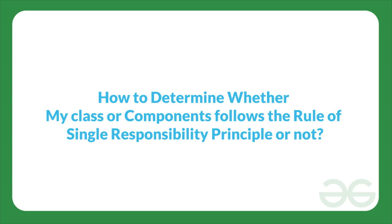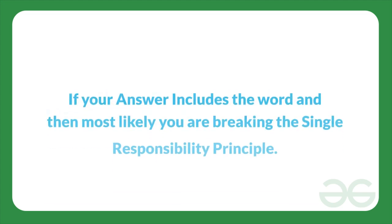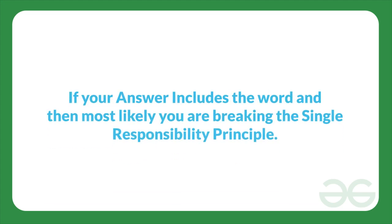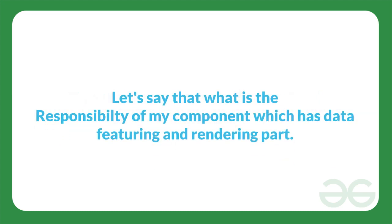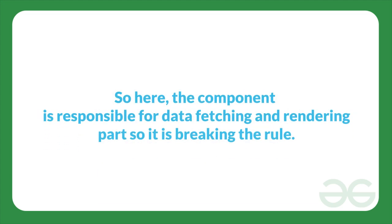A very quick and useful rule I follow is: ask the question, what is the responsibility of your class or component? If your answer includes the word 'and', then most likely you are breaking the Single Responsibility Principle. For example, if a component is responsible for data fetching and rendering, it is breaking the Single Responsibility Principle. Don't worry — we'll go through the code and most likely you will understand it from the code itself.